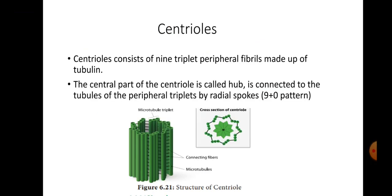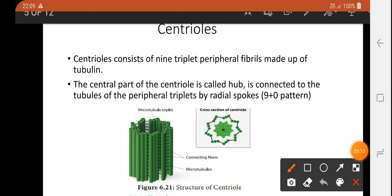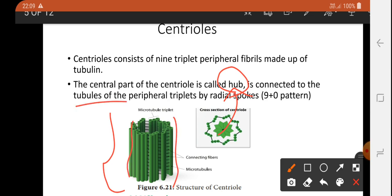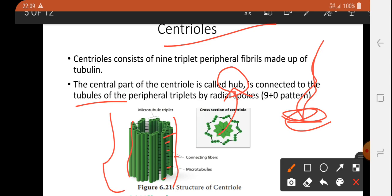This is Centrioles. Centrioles are found in the center part of the cell and act as a hub. They are made of tubules, and these are connected by connecting fibers linked to microtubules. Centrioles form the base of flagella. When a cell moves, the base is moving — that is the centriole at the center.